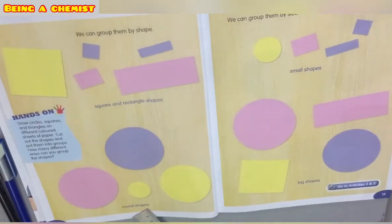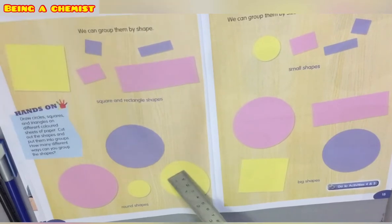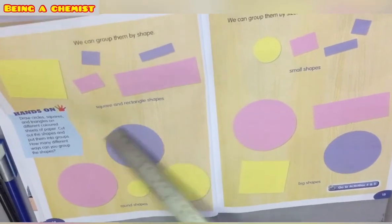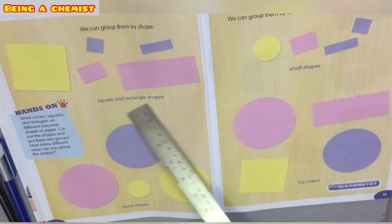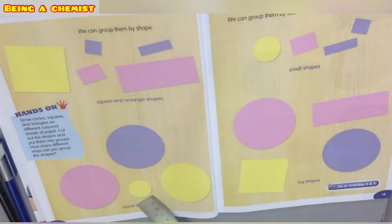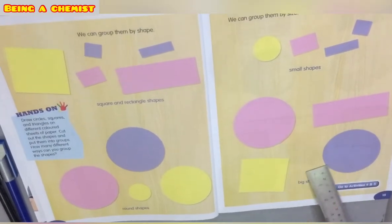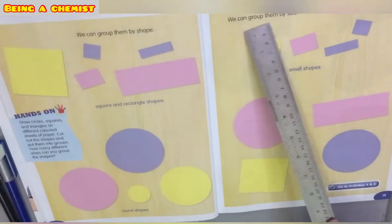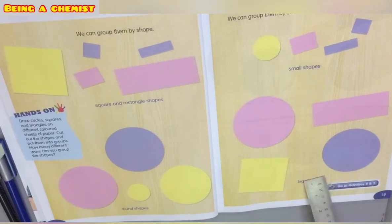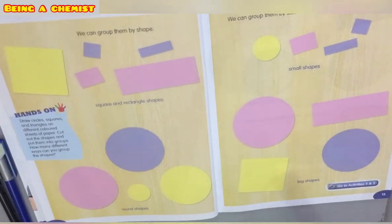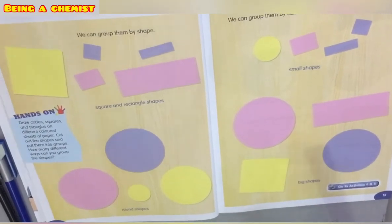Round shapes are arranged in another group. So there are two groups by shape: the first is square and rectangle, and the second is round shapes. We can also group them by size, as we have discussed before — big and small sizes of the given pieces of paper.